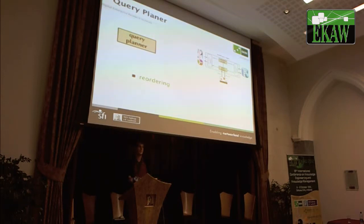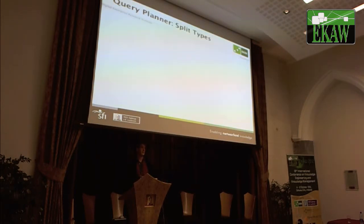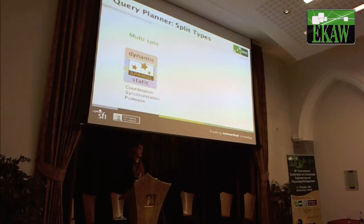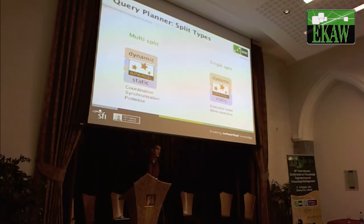Query planning is traditionally responsible for reordering of a query — in our case, for the mediator approach, for splitting a query, for delegation and execution. We looked at split types: one approach splits the query multiple times, identifying static patterns and dynamic patterns and sending the static ones to the store and the dynamic ones live. This can be done iteratively in a multi-way fashion, but requires a lot of coordination and synchronization between results. We should also consider politeness, because if we send too many requests at the same time to public endpoints, we might overload them or cause a denial of service. The other approach is a single split, which is more friendly and easier to execute but more restrictive — we simply group static patterns and dynamic patterns and then send them.